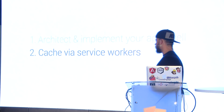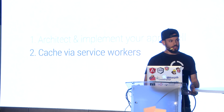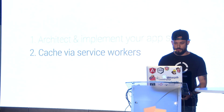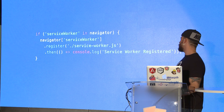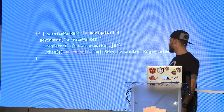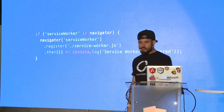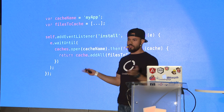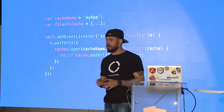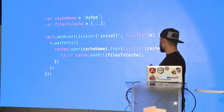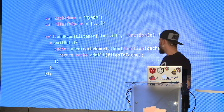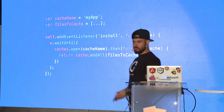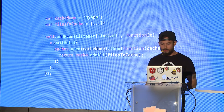We can do even better — we can cache the app shell using service workers. So when the user comes back to your application, it really loads instantly because it's cached. First, we check if the browser supports service workers and then register a service worker file. We listen for the install event and add our static files to the cache — declared in an array — and that's pretty much it.